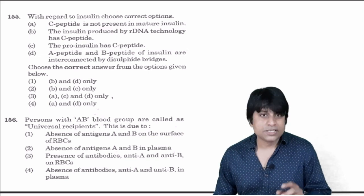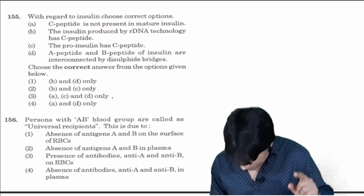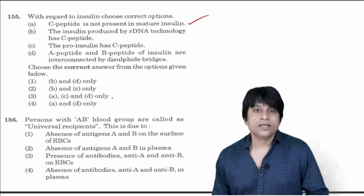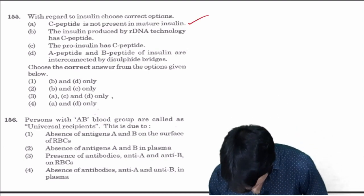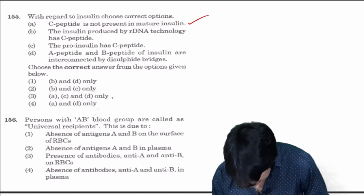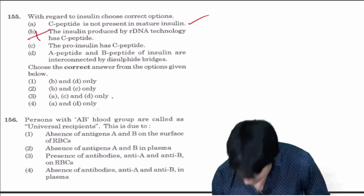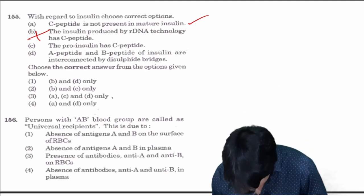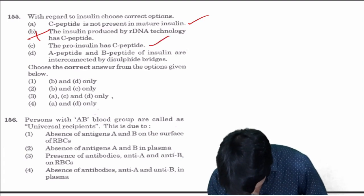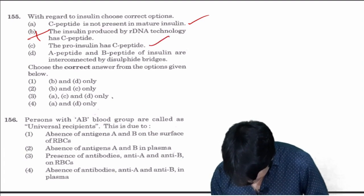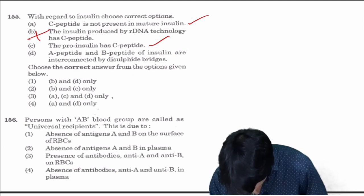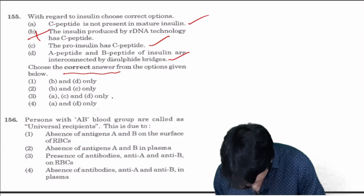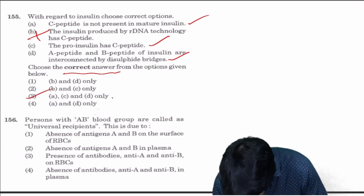With respect to insulin choose the correct options. C peptide is not present in mature insulin, this is right. The insulin produced by rDNA technology has C peptide - this is wrong because C peptide is removed to make mature insulin. The proinsulin has C peptide, this is right. A peptide and B peptide of insulin are connected by disulfide bridges, this is also correct.